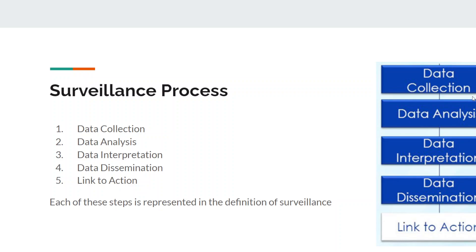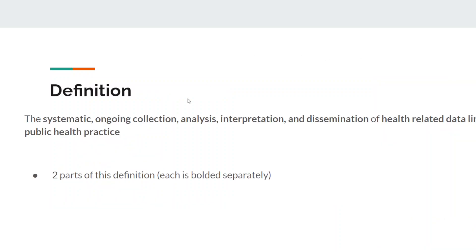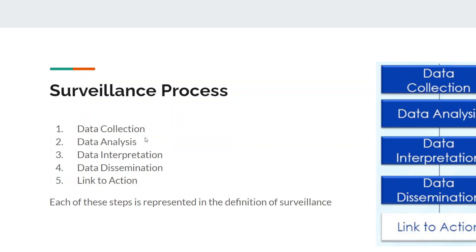We can see the surveillance process, which I was talking about earlier. In the five steps, they're very closely related to the things that appear in the definition. You have data collection, data analysis, data interpretation, data dissemination, and the link to action. Collection, analysis, interpretation, dissemination, and the link to action — that second part, the link to public health practice, is what you do with that data.